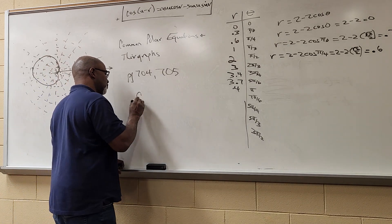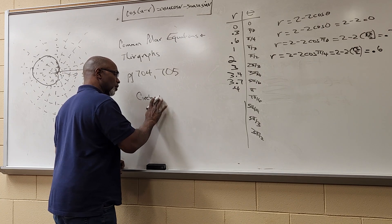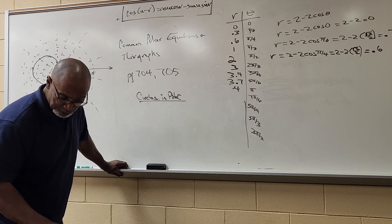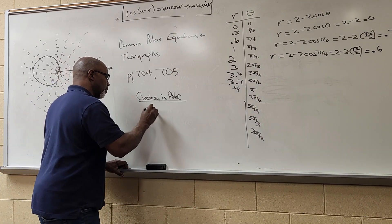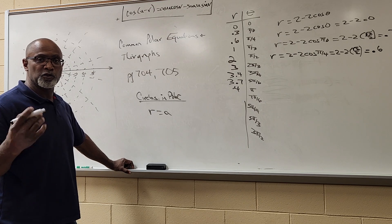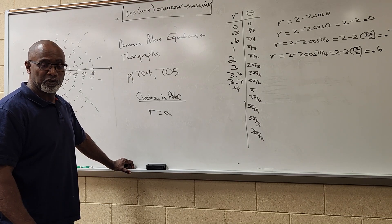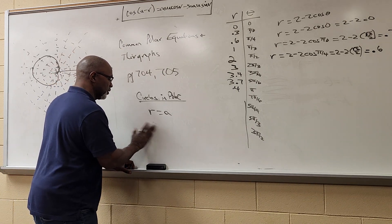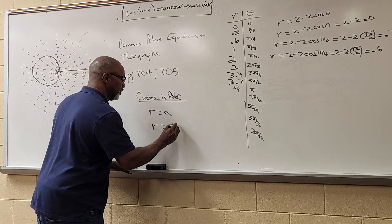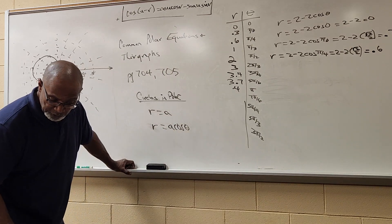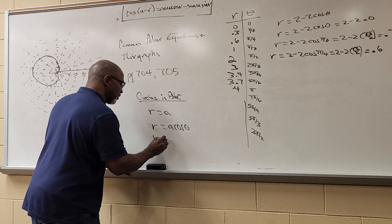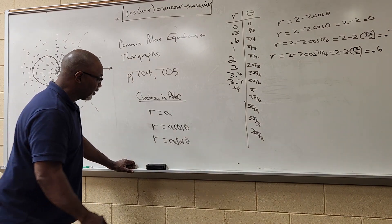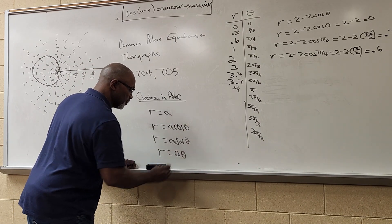For example, circles in polar: a circle can be r = a (where a is any number), or r = a cos θ. These are all ways to write a circle in polar coordinates. There are three ways to write a circle in polar.